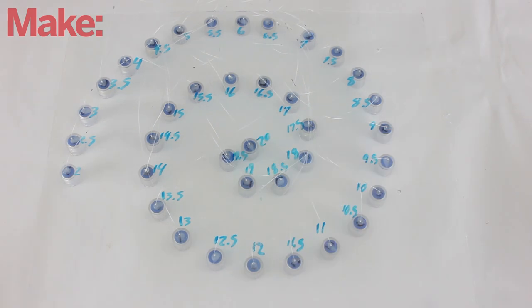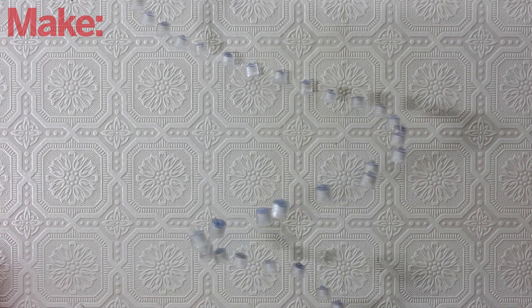Tie a knot in each piece of fishing line at the designated length and cut off the excess. When you're done, the caps should hang in a descending spiral.